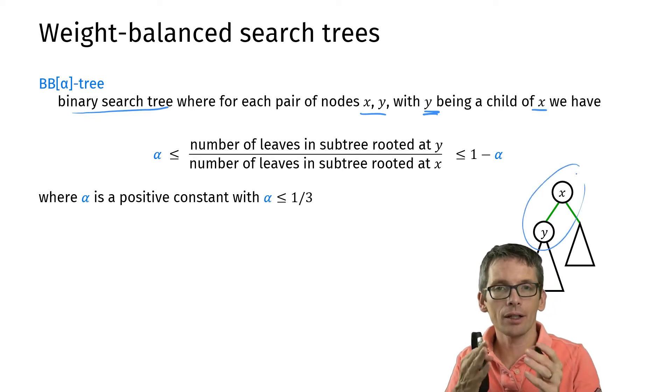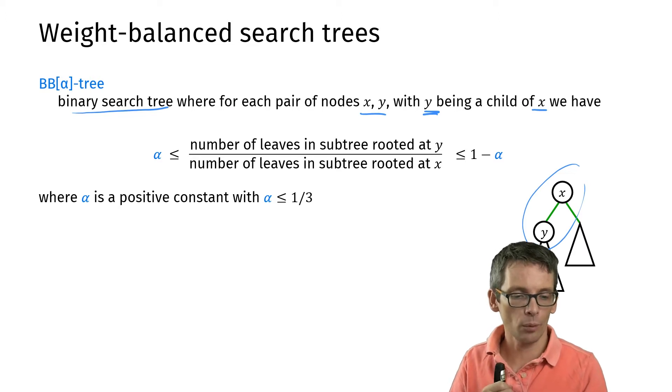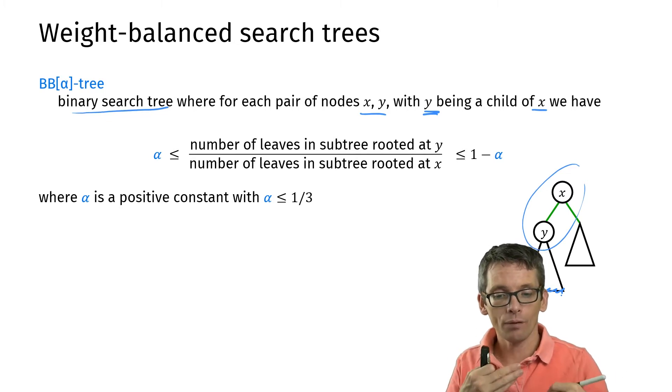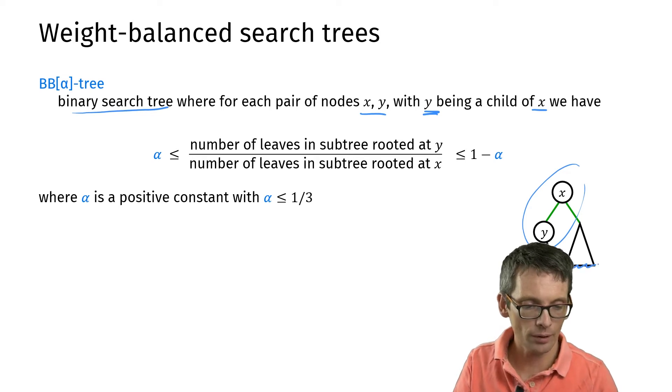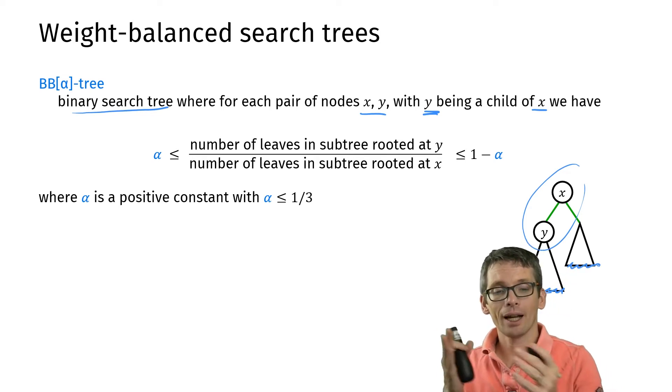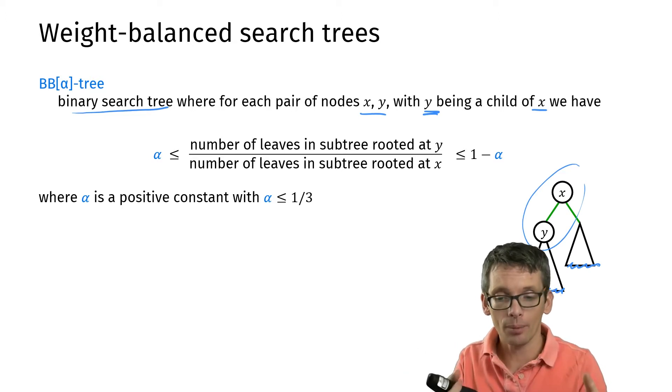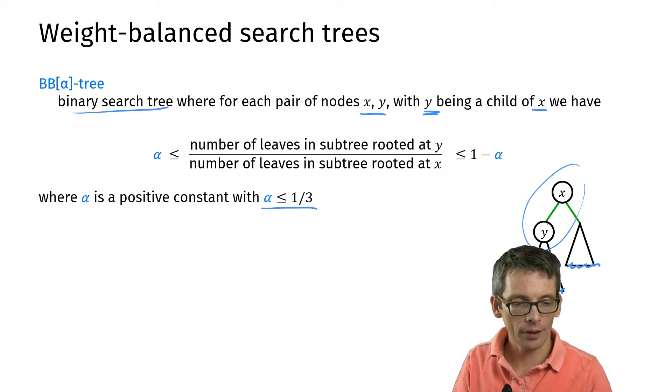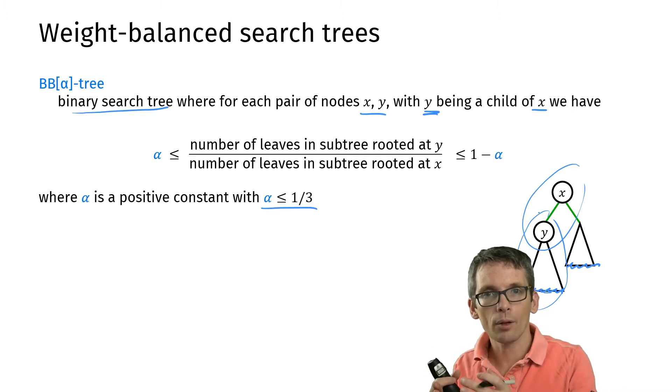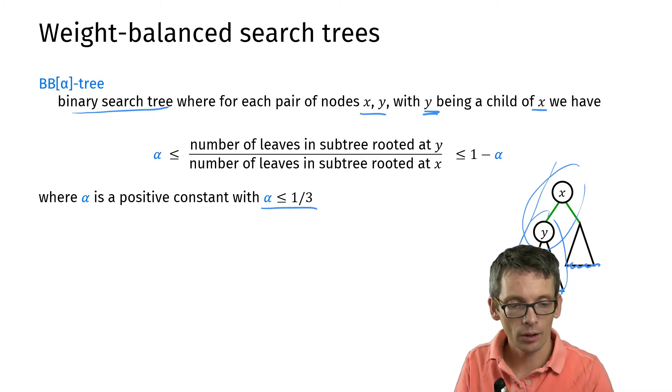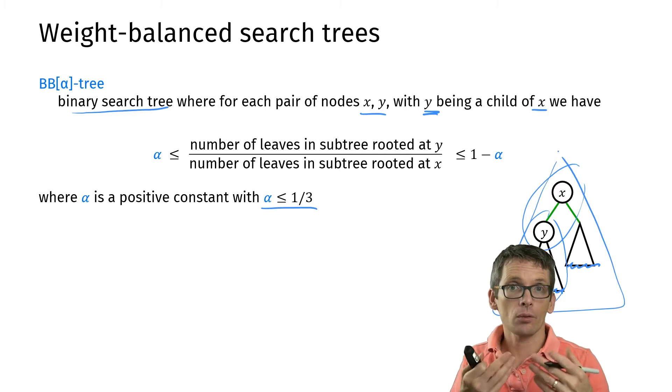what I want to have is that the number of leaves in the subtree of y, so I'm looking at the leaves here and I divide that by the number of leaves in the subtree at x, so that is the ones of y plus the ones here. That should be between α and 1 minus α. α is a parameter here and α should be smaller or equal 1/3. So I want to have that this subtree has between, let's say if α would be 1/3, between 1/3 and 2/3 of the leaves of this tree rooted at x.